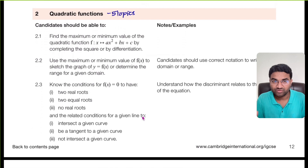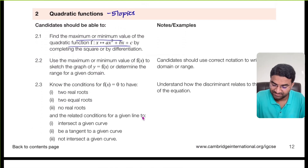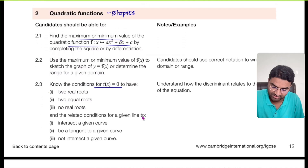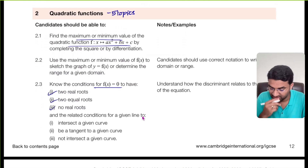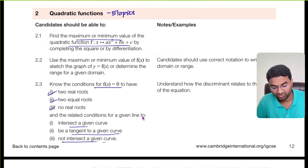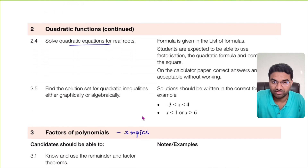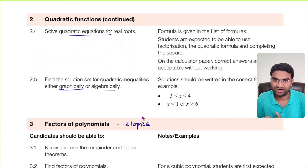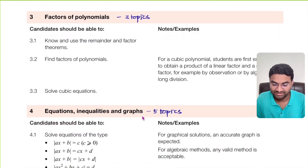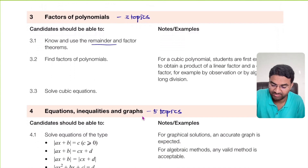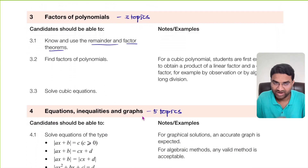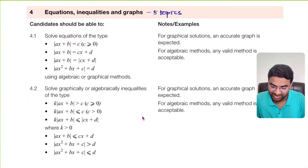In the Quadratic Functions topic there are five sub-topics: minimum and maximum values of a quadratic function, determining the range for a given domain, conditions for f(x) = 0 having two real roots, two equal roots, or no real roots, conditions for intersecting or being tangent to a curve, and solving quadratic equations both algebraically and graphically. The Factors of Polynomials topic covers the remainder theorem, factor theorem, and cubic equations.